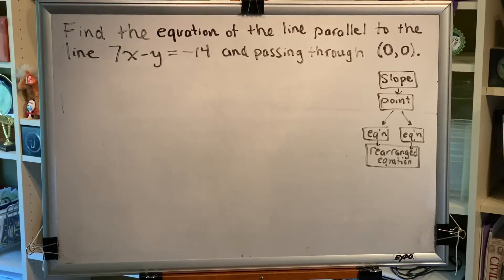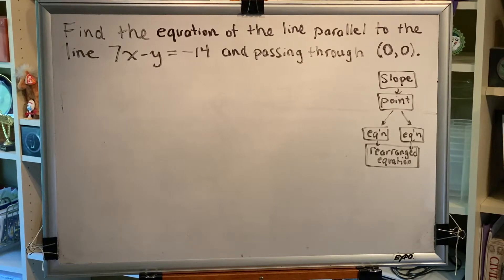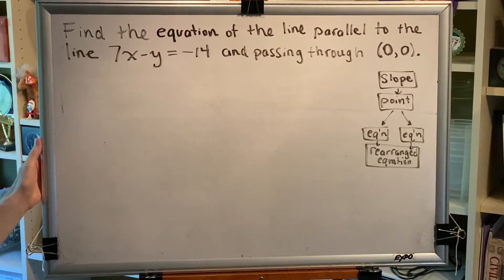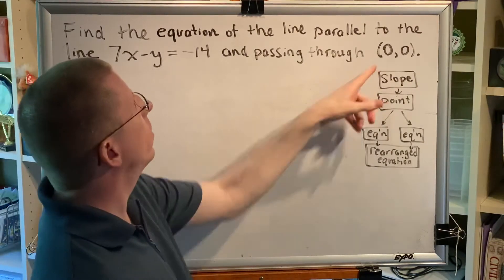The topic of this video is properties of tilted or slanted lines. Let's look at a problem. Find the equation of the line parallel to the line 7x minus y equals negative 14 and passing through the point (0,0).